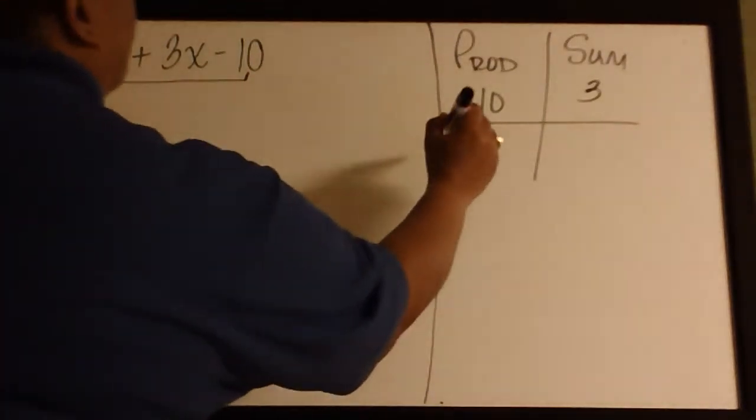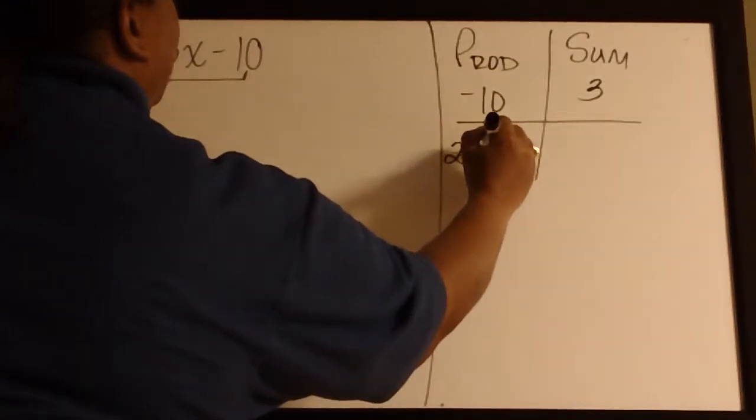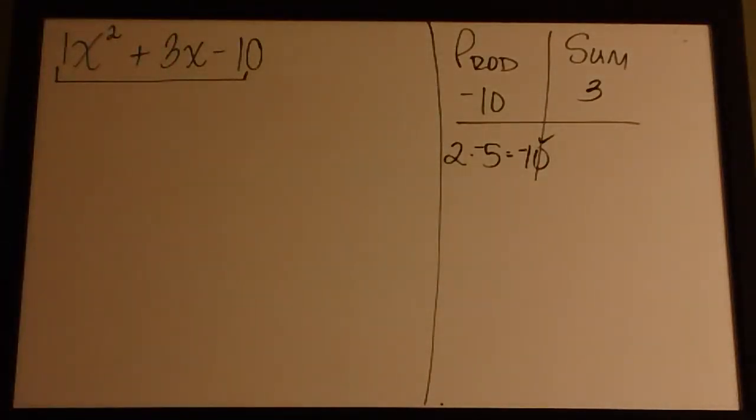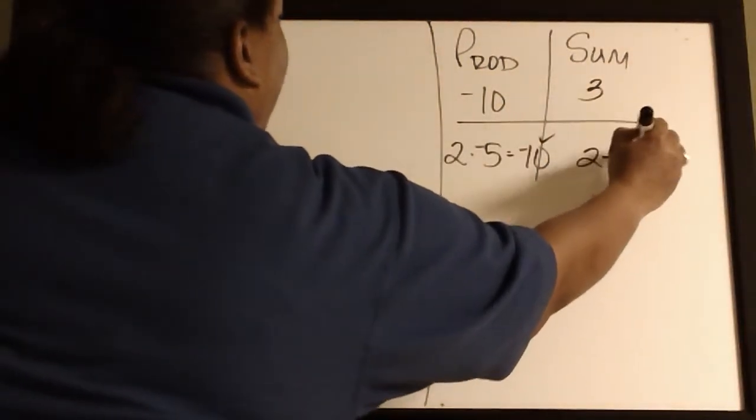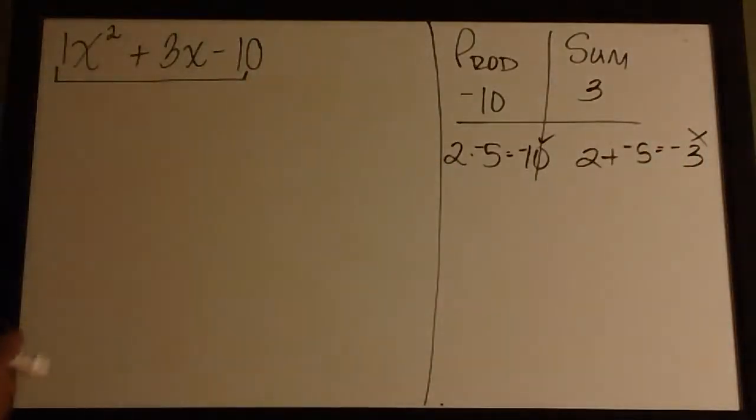So I can try 2 times negative 5, which does give me the negative 10 that I want. 2 plus negative 5 gives me a negative 3. So that doesn't work.